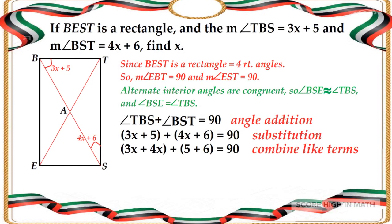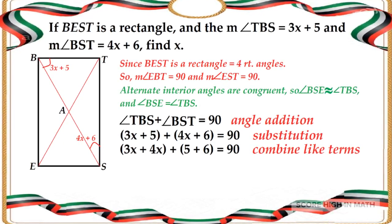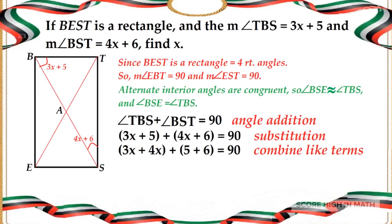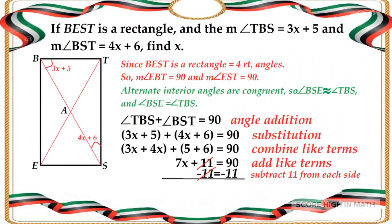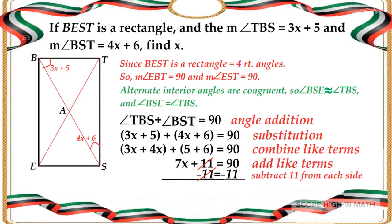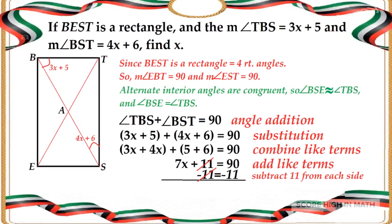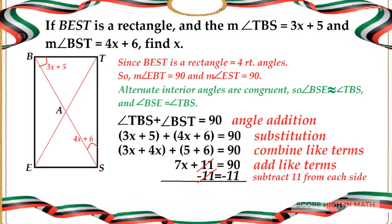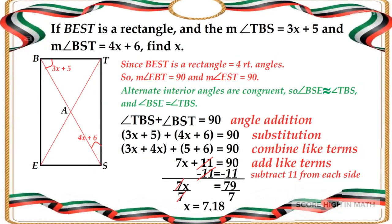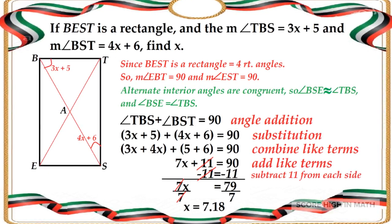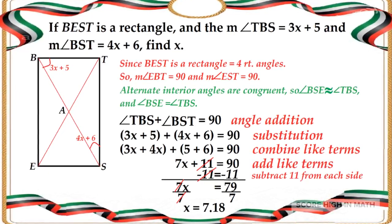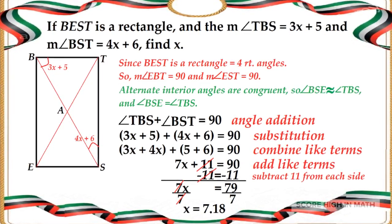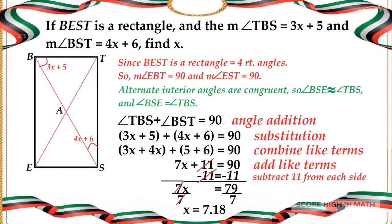Combining like terms to solve the equation: 3x plus 4x and 5 plus 6 is equal to 90. To simplify, it becomes 7x plus 11 is equal to 90. To eliminate the 11, we subtract 11 from both sides, giving us 7x is equal to 79. To solve for x, we divide both sides by 7, and therefore x is equal to 7.18.